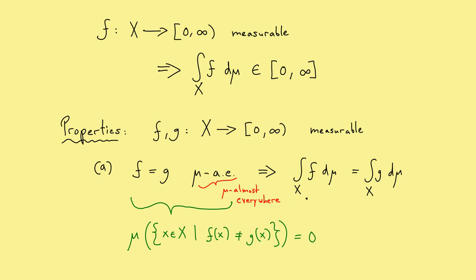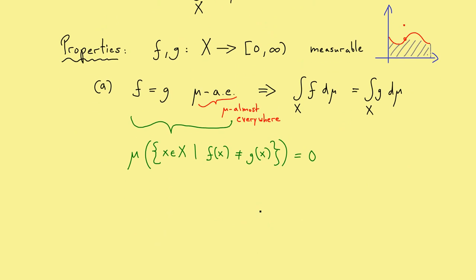This means that the Lebesgue integral cannot see things that happen on zero measure sets. Maybe for a visualization it's good to recall what we had for the Riemann integral. If you integrate a continuous function with our classical Riemann integral, you get out the area between the graph of the function and the x-axis. And now if you change the function at one point, so the result is a non-continuous function, you don't change the area at all, which means the integral is the same. For the Lebesgue integral this works in an abstract sense: you can change the function as much as you want, as long as the set of all these changes has measure zero.